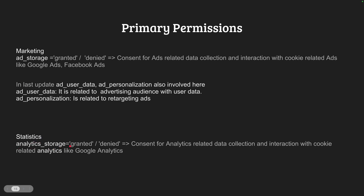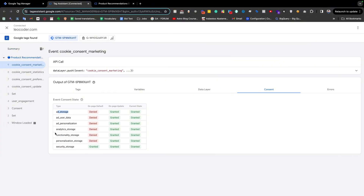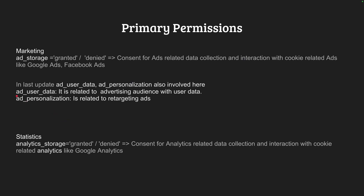When 'Analytics Storage' is granted, we are giving consent so that analytics-related things can collect information from the customer's browser and read and write analytics-related cookies. Then there are two more consent types: 'Ad User Data' — if the customer allows this, it means the customer is giving consent so that Google Ads can use user data to make custom audiences. And 'Ad Personalization' is related to retargeting ads — when the customer gives this consent, they are giving consent to interact with cookies for retargeting ads.